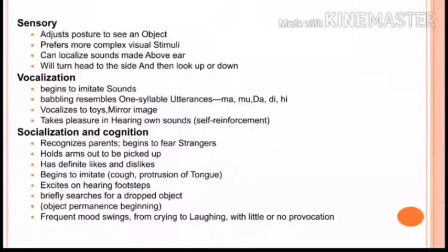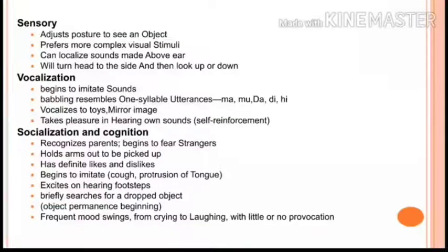In sensory development at six months, the baby can adjust posture, and importantly can now localize sounds made above the ear — at five months they could only localize sounds below the ear. In vocalization, babbling resembles one-syllable utterances like 'ma,' 'mu,' 'da,' 'di,' 'hi.' The baby vocalizes to toys and takes pleasure in hearing its own sounds, demonstrating self-reinforcement.